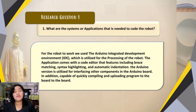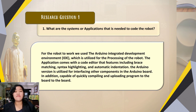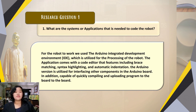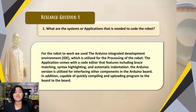For research question one — what systems or applications are needed to code the robot — we used the Arduino Integrated Development Environment, also known as Arduino IDE, which is utilized for the processing of the robot. The application comes with a code editor featuring brace matching, syntax text highlighting, and automatic identification. The Arduino IDE is used for interfacing other components on the Arduino board and is capable of quickly compiling and uploading programs to the board.